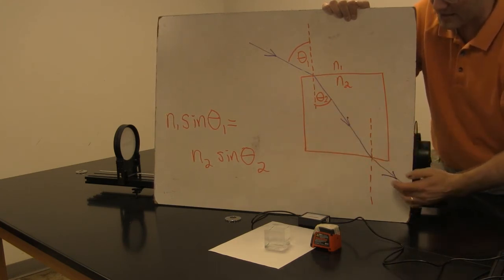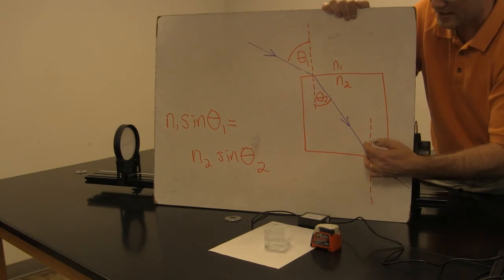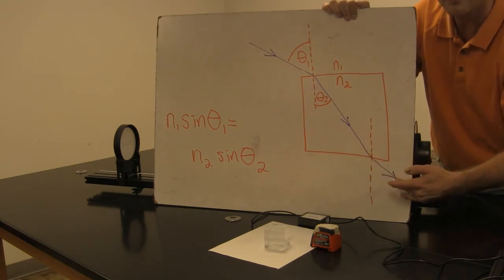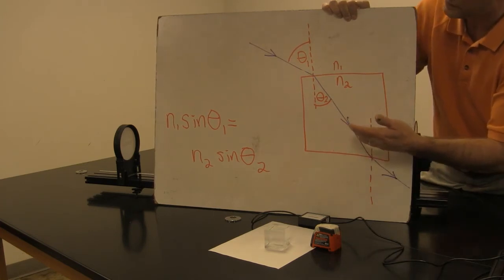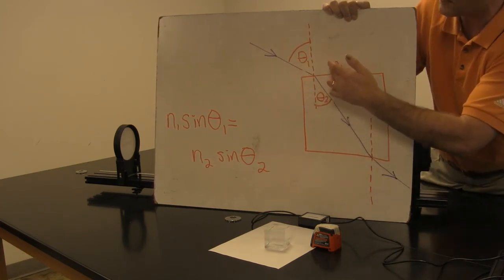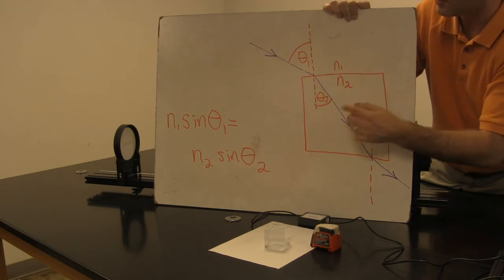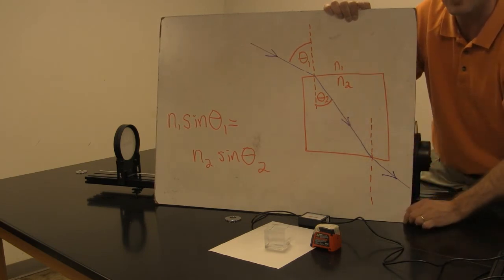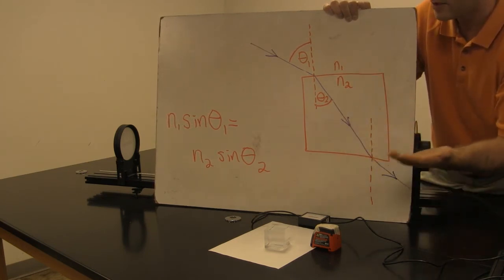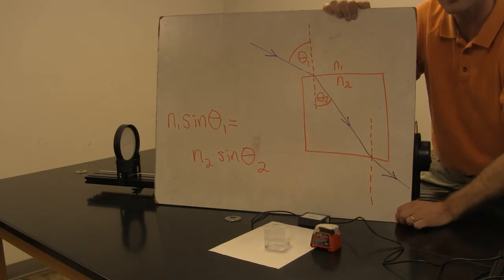On the way out of the glass, it does the same thing, except now it's incident from the inside to the outside. So it's sort of the opposite. Using Snell's law, if you measure these angles and know what the index of refraction of air is, you can calculate the index of refraction of glass and compare it to a known range of indices of refraction of glass.